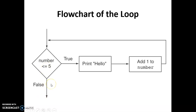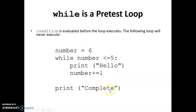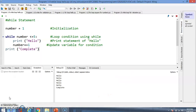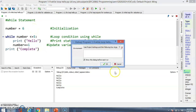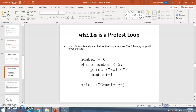The while loop is a pre-test loop, meaning it tests the condition before executing. So if you declare `number = 6` and the condition is `while number <= 5`, the condition is already false at the beginning — it will never print hello, and will go straight to print 'complete'. Running this confirms: it does not print hello, only prints complete.